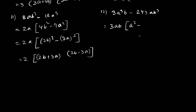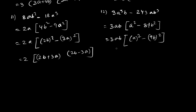For question 12, we take 3ab common, leaving a² - 81b², which we convert to a² - (9b)². Applying the formula gives the answer: 3ab(a + 9b)(a - 9b).